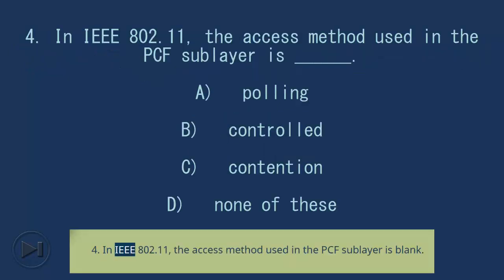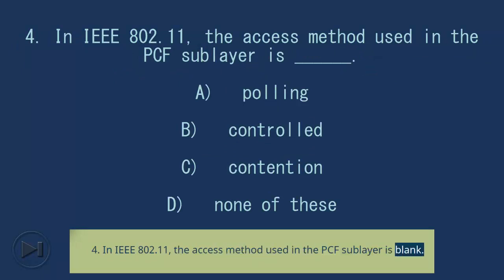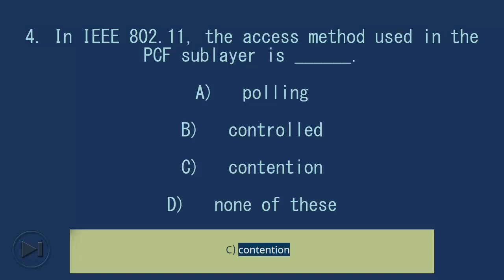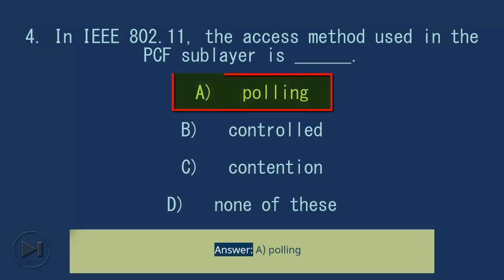Question 4: In IEEE 802.11, the access method used in the PCF sublayer is blank. A. Polling, B. Controlled, C. Contention, D. None of these. Answer: A. Polling.